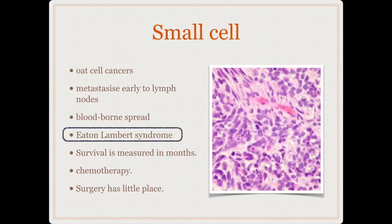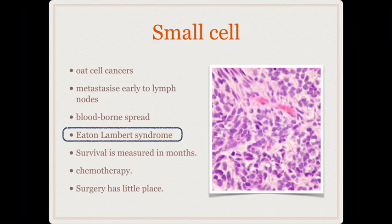Small cell cancers produce an interesting syndrome known as Eaton-Lambert syndrome, which is clinically very similar to myasthenia gravis. So one differential diagnosis for myasthenia gravis is Eaton-Lambert syndrome, and another common cause is thymoma. Thoracic imaging in myasthenia gravis serves two purposes: to diagnose thymomas and to look for small cell cancers. Surgery has very little place in small cell cancers; chemotherapy is the mainstay of treatment.